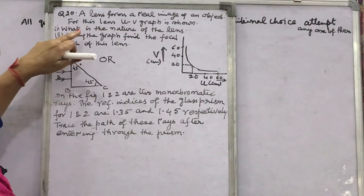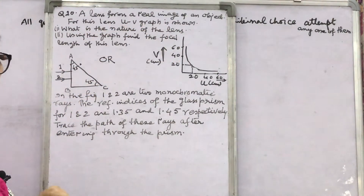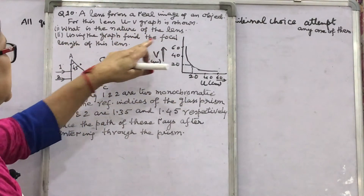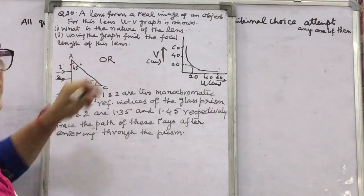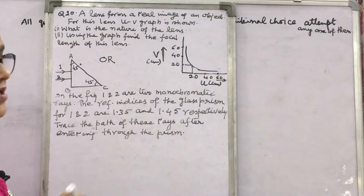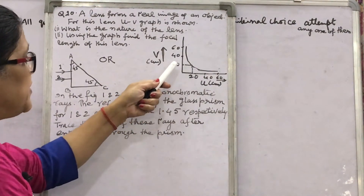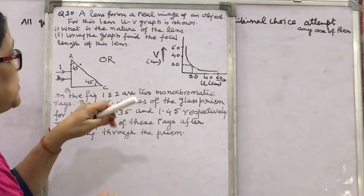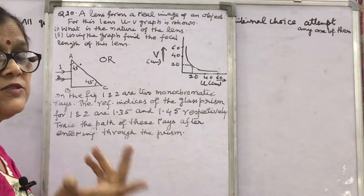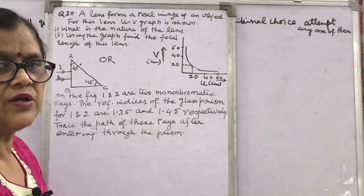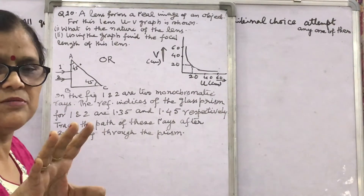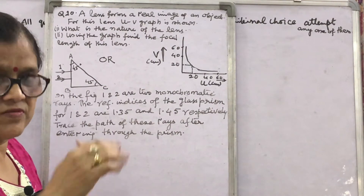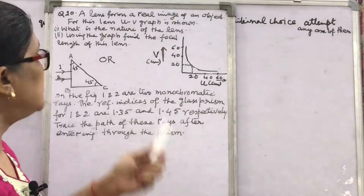See question 20. A lens forms a real image of an object; the UV graph is shown in the figure. What is the nature of the lens? A concave lens never forms a real image, so the lens must be a convex lens. That is the answer to the first part: convex lens.